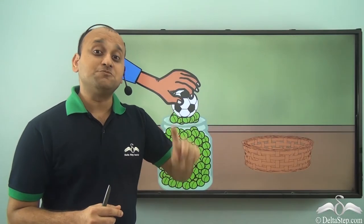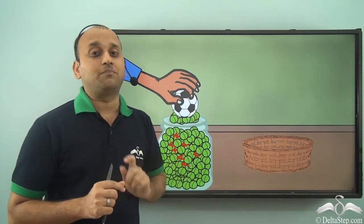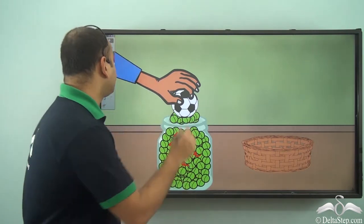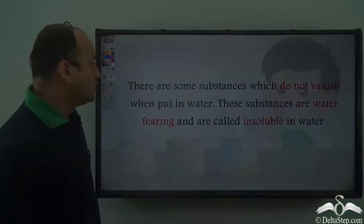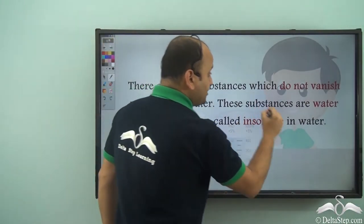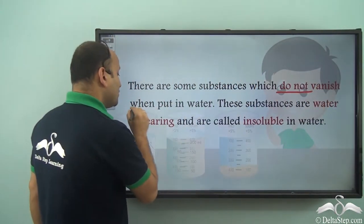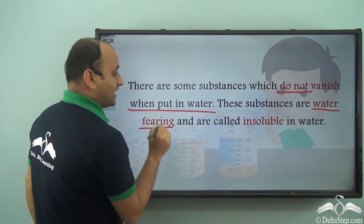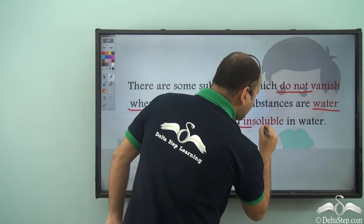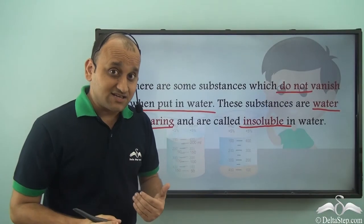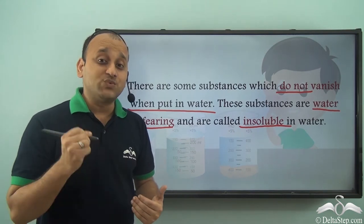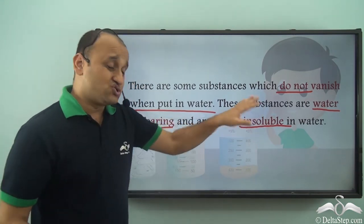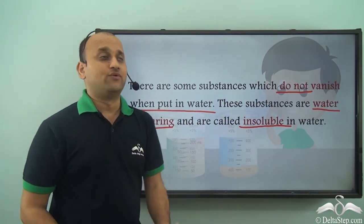Sand particles are much bigger than the gap between the water particles, and as a result, they do not mix in water. So there are some substances which do not vanish when put in water. These substances are water-fearing and are called insoluble in water. All substances which do not mix with or vanish in water are called insoluble. Sand is insoluble in water.